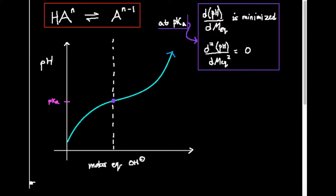Welcome back. One of the first topics in biochemistry and analytical chemistry is acid-base chemistry. One of the things that we can do with weak acids and weak bases is something called titrations.